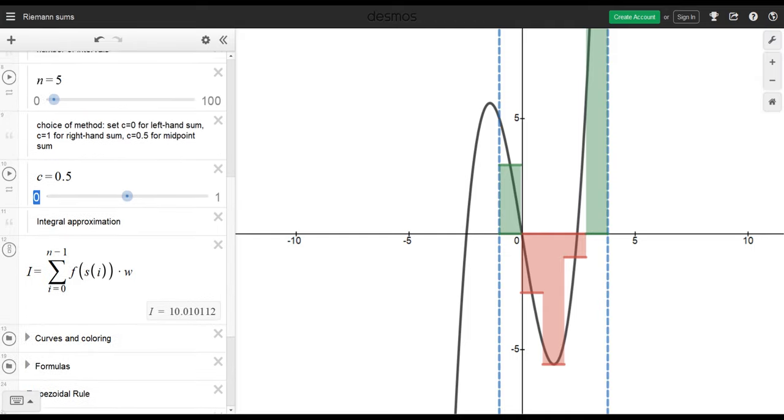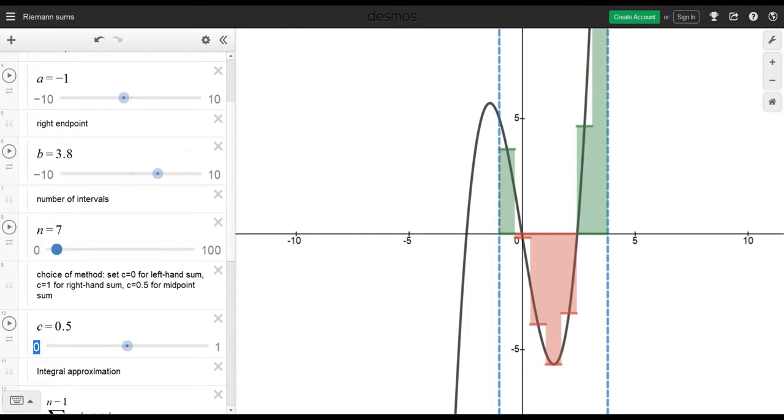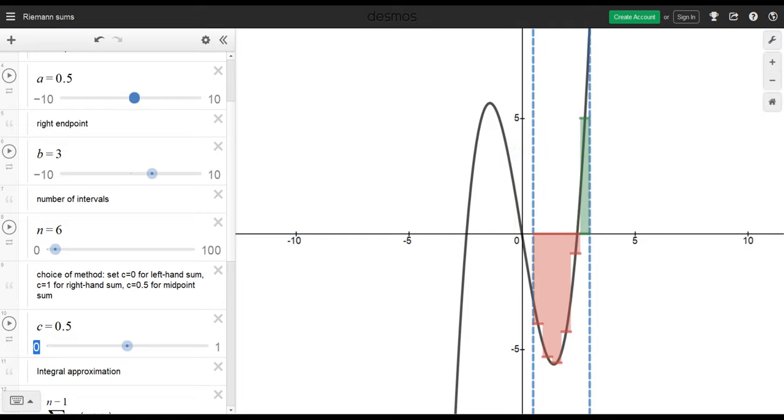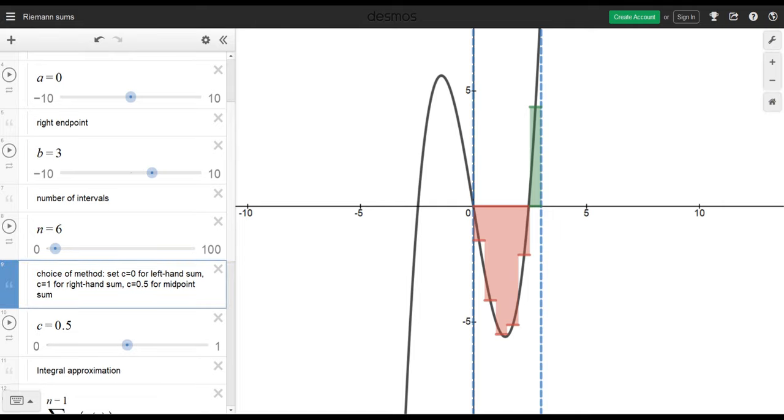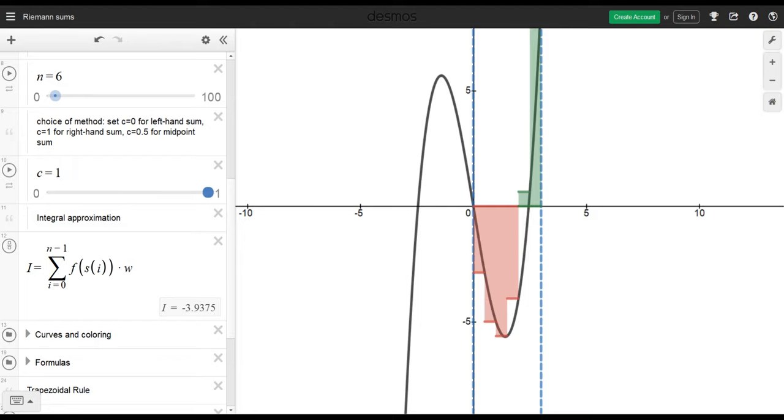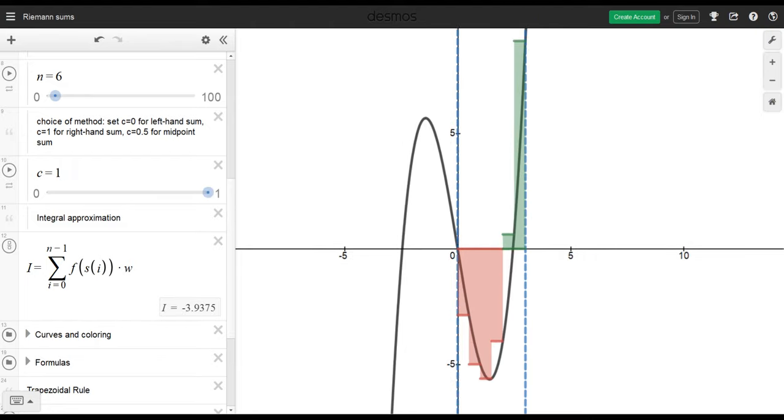So if we put this back to 6 rectangles and we put this to 3 and we put this to 0 and right endpoint rule... This right here was the exercise we had done in the previous video. You'll see that the answer we got was the same, -3.9375. So this Desmos website does pretty nice for computing these so-called Riemann sums. We'll talk about those more in a future video here. Helps us calculate this area under the curve.